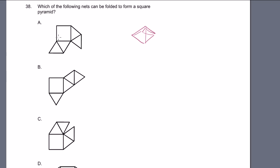If I fold this guy up and then this guy up, can this guy be the other side of the pyramid? No — because if I fold this guy up like this, this guy over here is going to fold straight down and fill that up. So this guy right here can fill that right there. But then this last flap won't fill in the blank — it will just recover the same flap again. So choice A is not the correct choice.